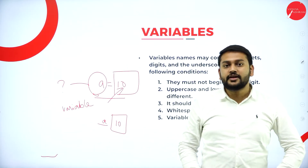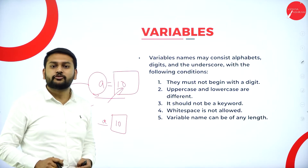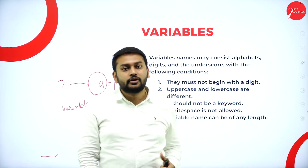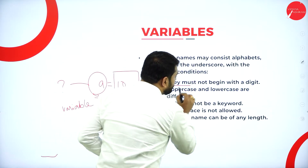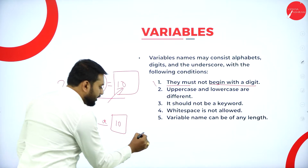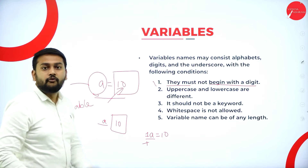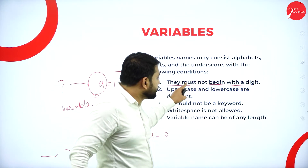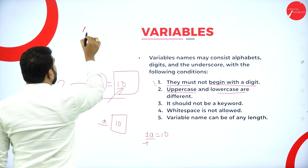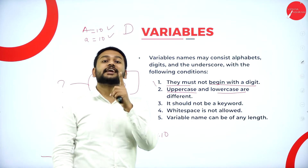Whenever you name a variable, you must follow identifier rules. The first rule: the variable name must not begin with a digit — for example, writing 1a = 10 is not a valid variable name. The second rule: uppercase and lowercase are different, meaning variable names are case-sensitive — 'a' and 'A' are treated as two different variables.